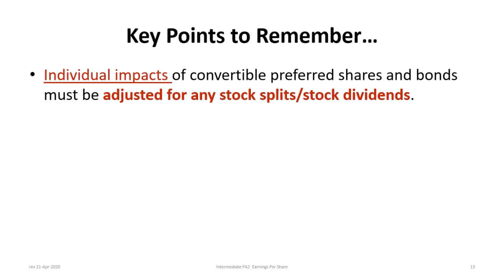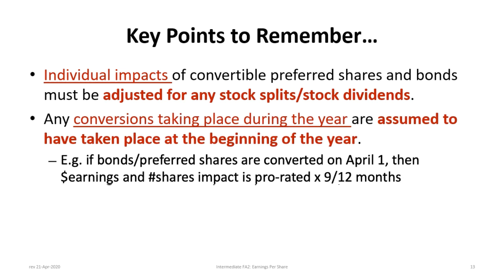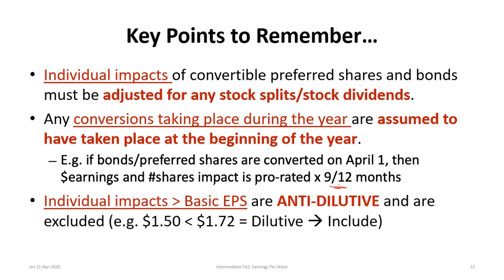Key reminders: do not include dividends in arrears — current year only. Individual impacts of convertible preferred shares and bonds must be adjusted for any stock splits or stock dividends. If conversions actually take place during the year — for example, on April 1st — the earnings and share impacts are prorated, such as 9 out of 12 months. Any individual impact greater than the basic EPS is anti-dilutive and excluded. For example, a $1.50 impact is less than $1.72 basic EPS, so it's dilutive; a $1.80 impact would be excluded.